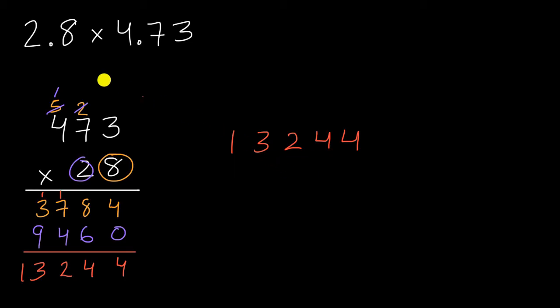And here's where estimation is useful. We know that 2.8 times 4.73 is going to be roughly equal to what? Well, 2.8 is pretty close to three, so I'll estimate 2.8 as being three. And 4.73 is, if I had to estimate, I would say it'd be pretty close to five. So this should be pretty close to three times five. So it should be close to 15.